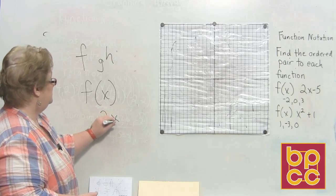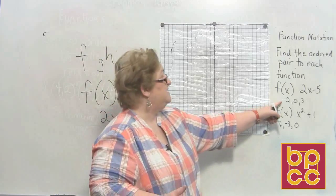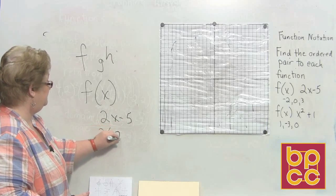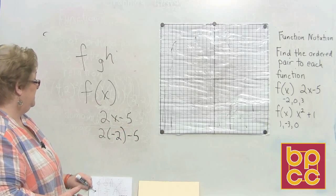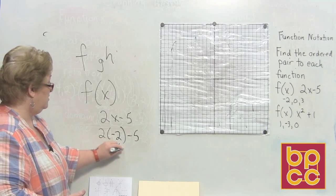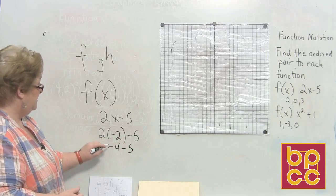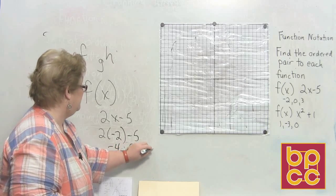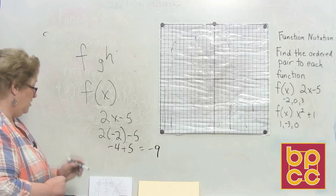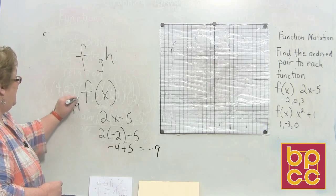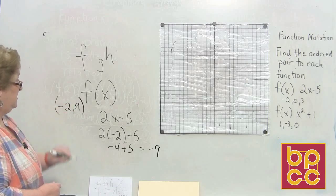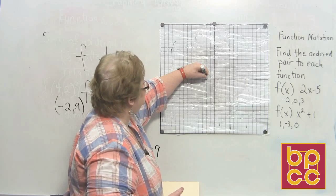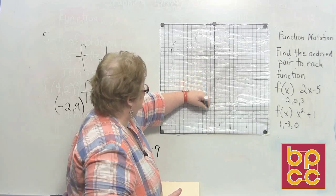So the equation is 2X minus 5. The first value they want us to test is a negative 2 in place of X. So I'm going to go 2 times negative 2 minus 5. And 2 times negative 2 is negative 4 minus 5. A negative 4 minus 5 is negative 9. So when X was negative 2, Y was negative 9. Let's go plot that — when X was negative 2, Y was negative 9, going down 9 units.